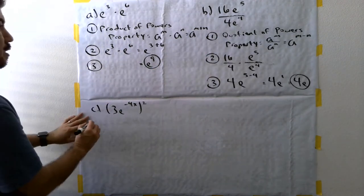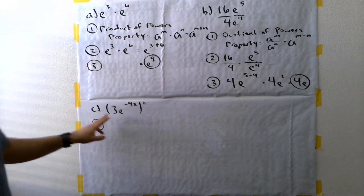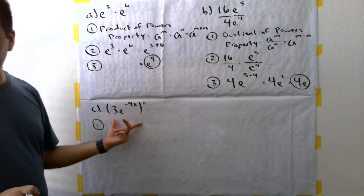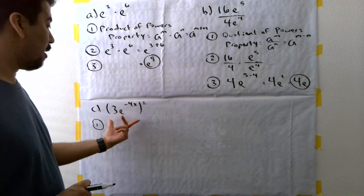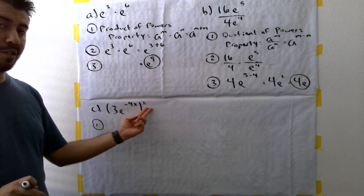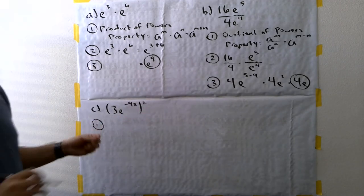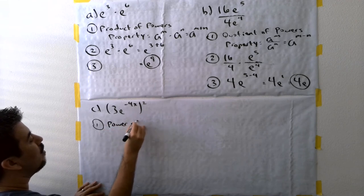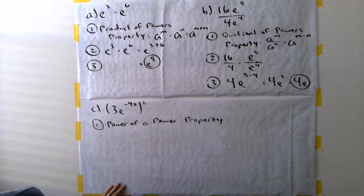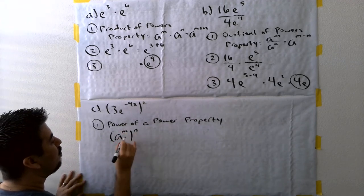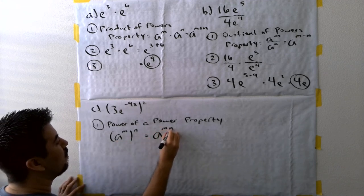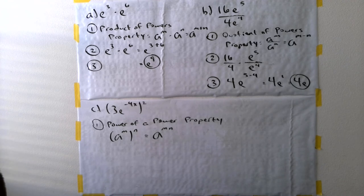For problem C, we're going to use a couple of properties — two properties are involved in this particular problem. I want to look at the properties of exponents and find one where we have parentheses involved, with an exponent inside the parentheses and an exponent on the outside. The first one to identify is the power of a power property: when you have a to the m raised to another exponent, you multiply the exponents together.